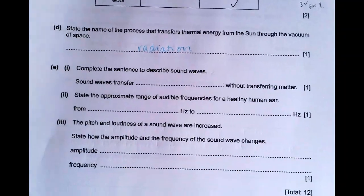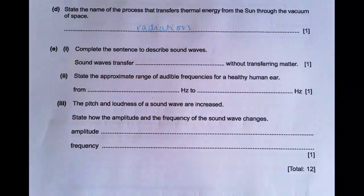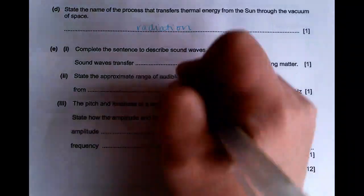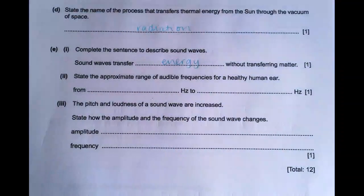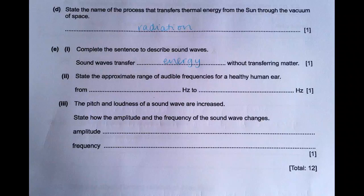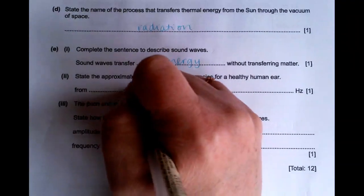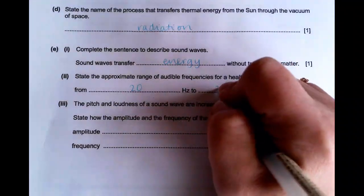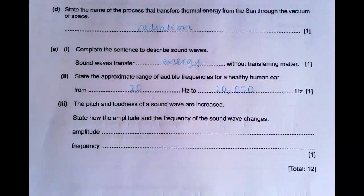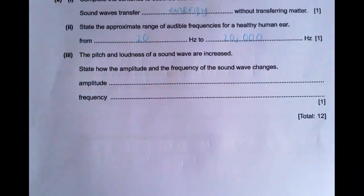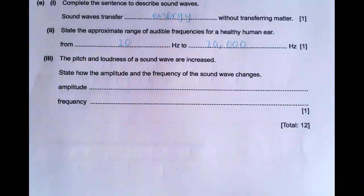Complete the sentence to describe sound waves. So sound waves transfer something without transferring matter. That word there is energy. The approximate range of audible frequencies for a healthy human ear is from 20 hertz to 20,000 hertz. The pitch and loudness of a sound wave are increased. State how the amplitude and the frequency of the sound wave changes.